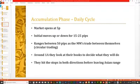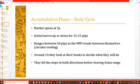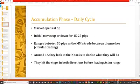If they have five million dollars of buy contracts, they need to grab five million dollars from retail traders. For example, they may need five million Japanese yen translated to five million U.S. dollars for a customer. Around 1 a.m. they look at their books and decide. Once they've made their decision, they hit the stops in both directions before leaving the Asian range. I'll illustrate this and show it on the chart.